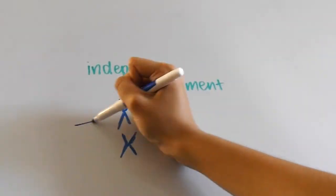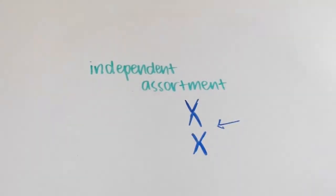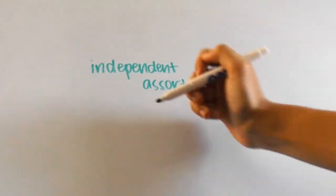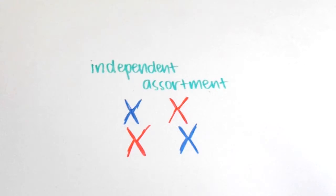For instance, the chromosomes here can line up with all the father's genes on this side, or on this side, or all jumbled up like this. This leads to many different possibilities of what the four resulting cells will look like.